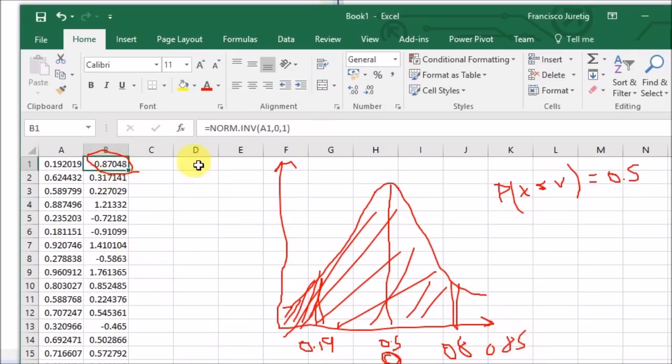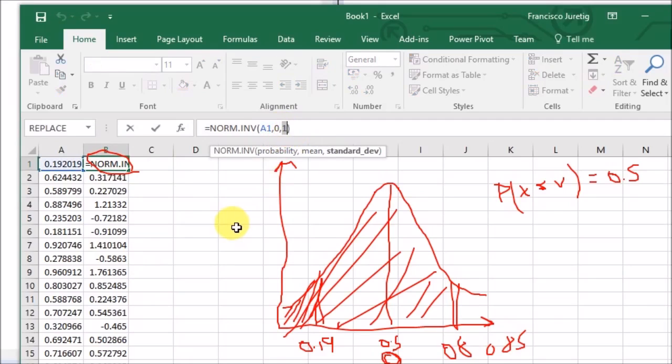And finally remember that an important thing here that will obviously change all your calculations is what's the mean and standard deviation that you use. But typically for normally distributed variables we use 0 and 1.